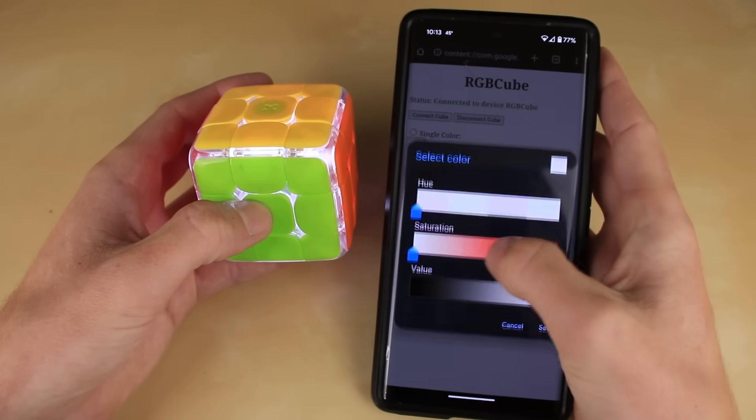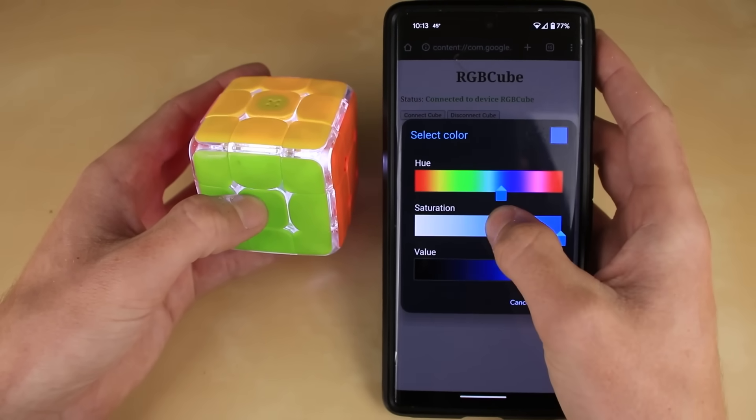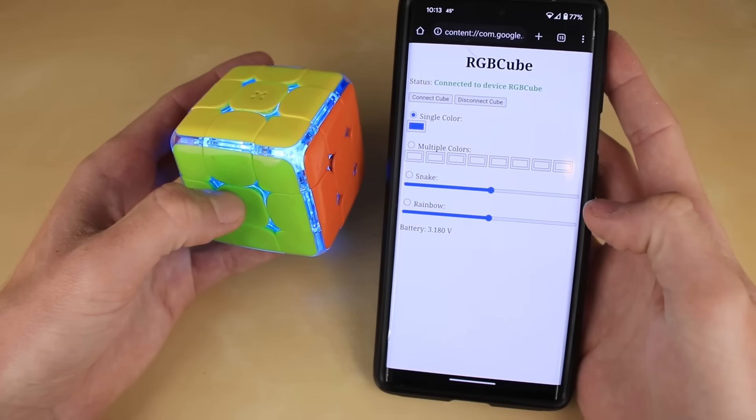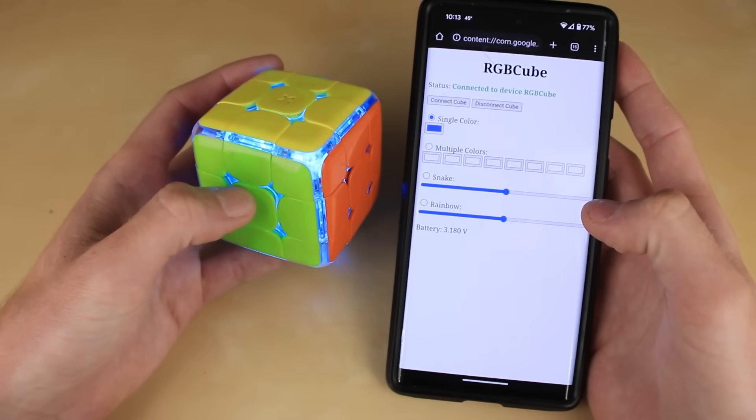Choose any of these predefined colors, or just any color that we want. So for example, how about darkish blue right here? Set that, and there we go. The cube is that color.